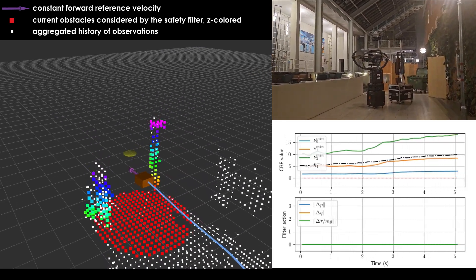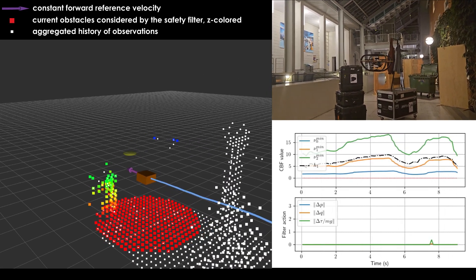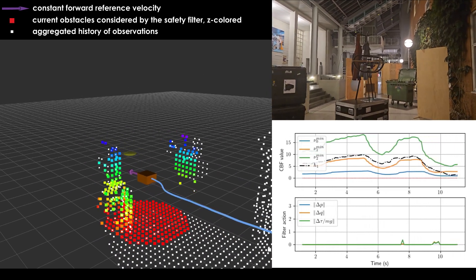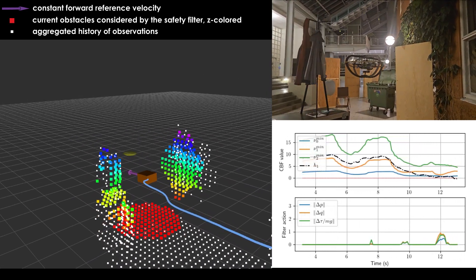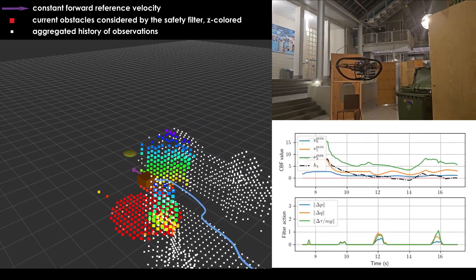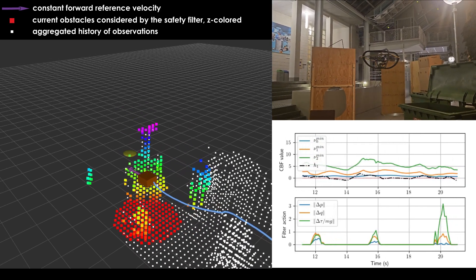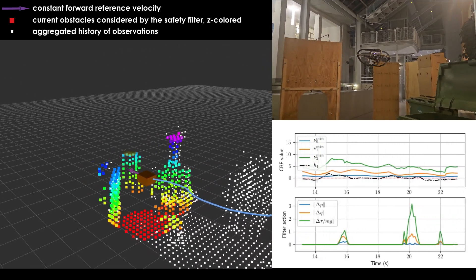The composite control barrier function is constructed from a local voxel map representation of the environment. The current voxel map used is highlighted in color. The minimum values of the individual constraint functions and their high-order set functions are plotted on the right as nu0, nu1, and nu2 respectively, while the composite control barrier function value is plotted as h1.